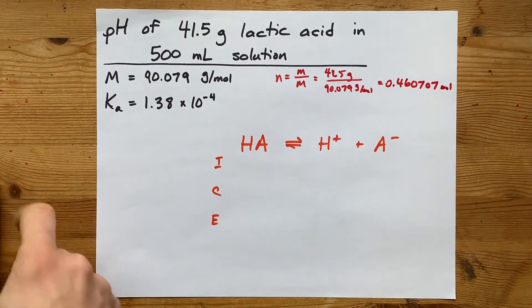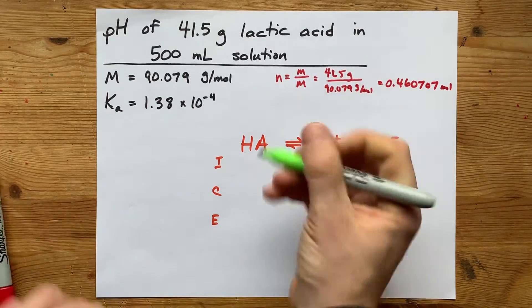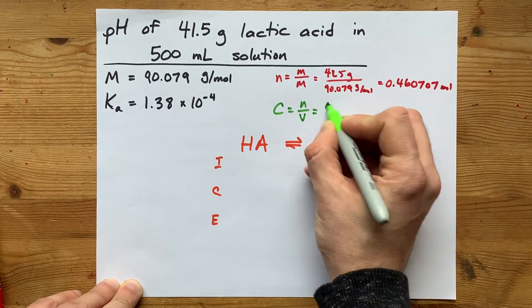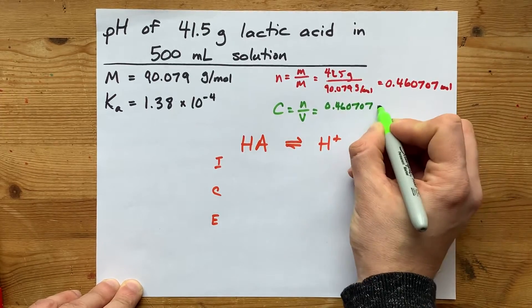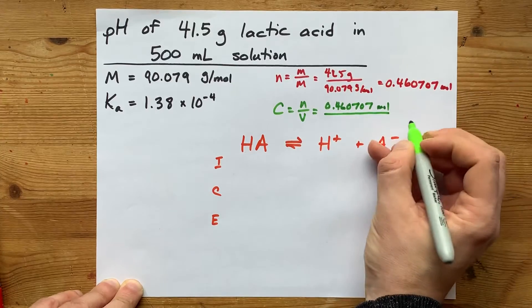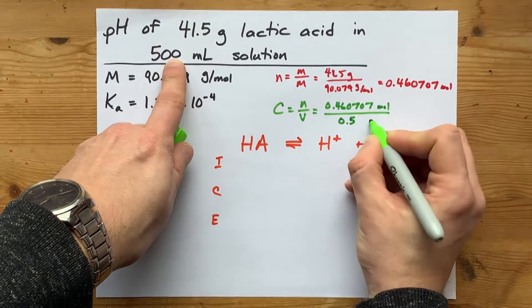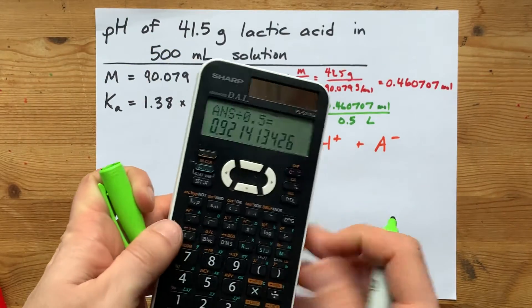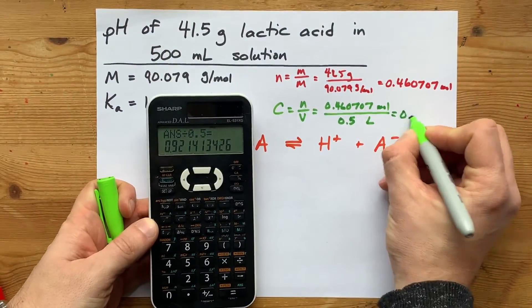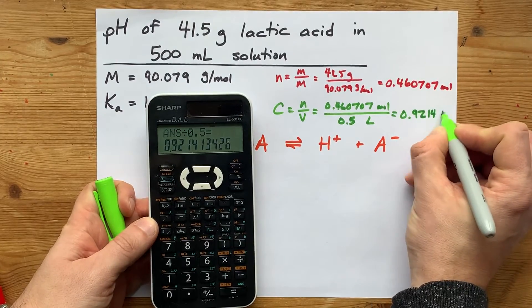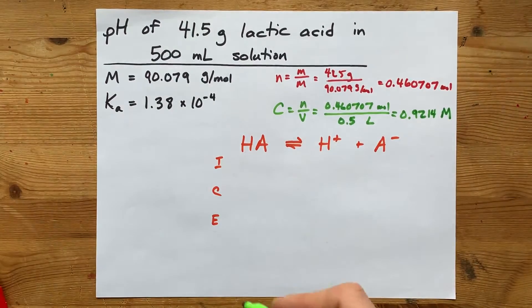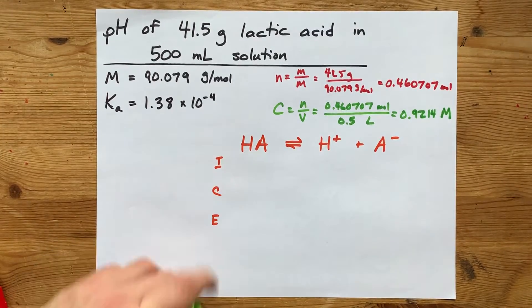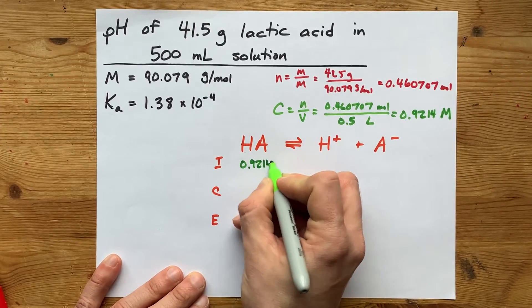And then you need concentration. The concentration is moles divided by volume. 0.460707 moles divided by volume in liters. This is 0.5 liters. So I'm just going to bring out the calculator again, divide by 0.5. I get an initial concentration of 0.9214 moles per liter. That goes in the initial concentration of the weak acid, 0.9214.